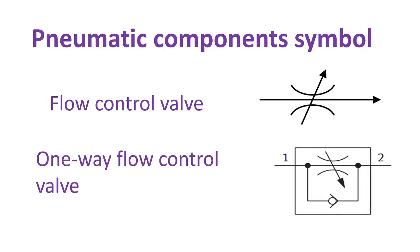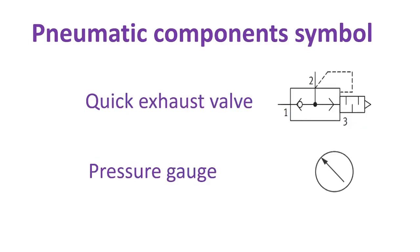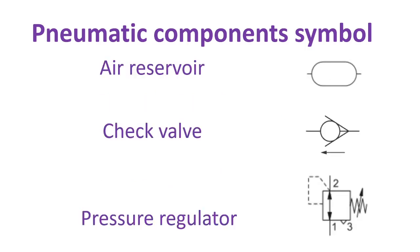Let's proceed with other pneumatic component symbols. This is the symbol of a flow control valve. Next, the symbol of a one-way flow control valve. Symbol of a compressor, symbol of a filter, symbol of a quick exhaust valve, symbol of a pressure gauge, symbol of an air reservoir, symbol of a check valve, and a pressure regulator.